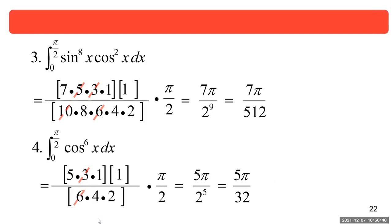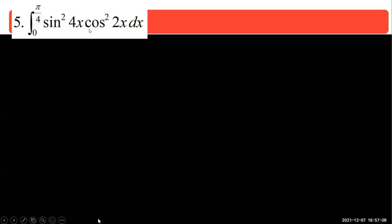For Wallis's formula, it only works when the limits are exactly 0 and pi over 2, and the angles in the sine and cosine must be the same. If one is 2x and the other is x, it won't work. The powers must be positive or zero.